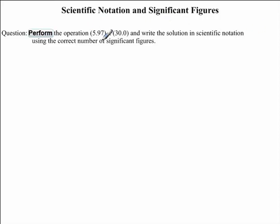To begin this question, let's solve for the product of these two numbers. We have 5.97 which is multiplied by 30.0. We can either use a calculator to solve for the answer or we can do it manually. In either case, you should get the result of 179.1.